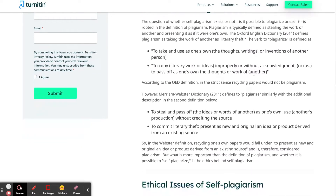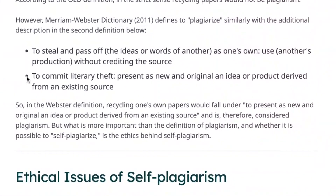Mistake number three: self-plagiarizing. This happens when you recycle or copy your previous work into your current work. You may think that since you wrote it, it should be okay. But there are actually two types of plagiarism — stealing other people's work, and committing literary theft by presenting old work as if it's new.